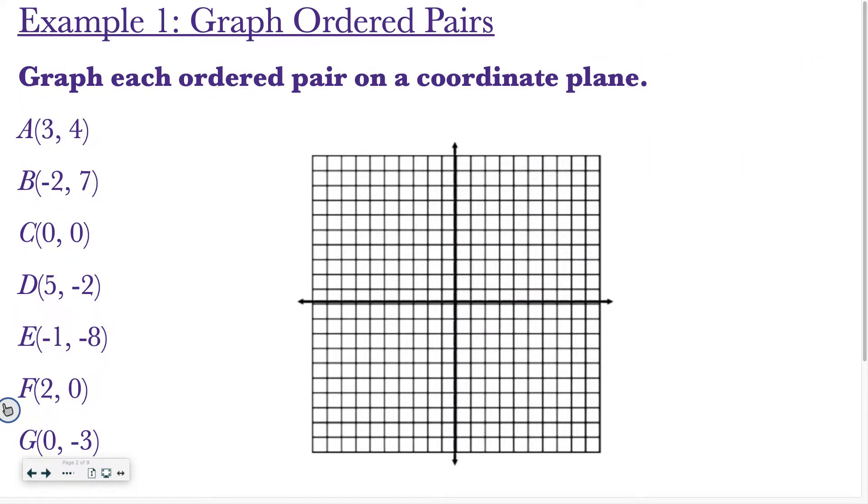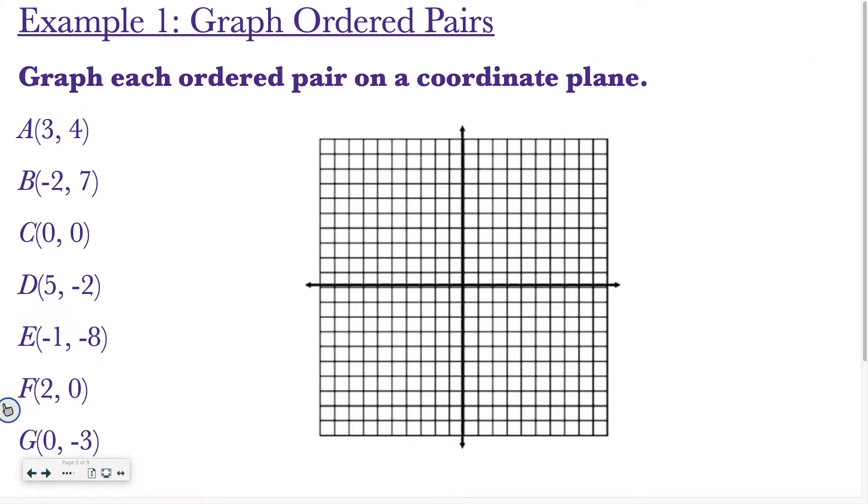So, example 1, graph ordered pairs. This is something that you guys have been doing since elementary school, so hopefully this lesson doesn't seem too bad. Just a reminder, when you're graphing ordered pairs, this is called your x-axis. The one that goes up and down is your y-axis, and where they intersect is called the origin, or the point is called 0, 0.